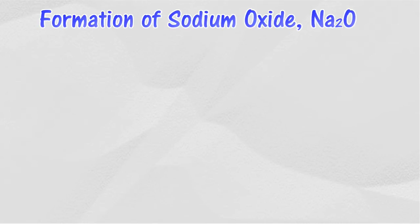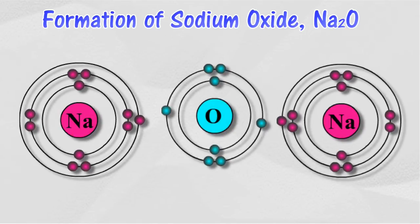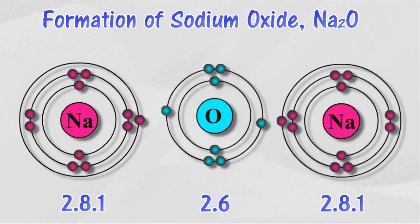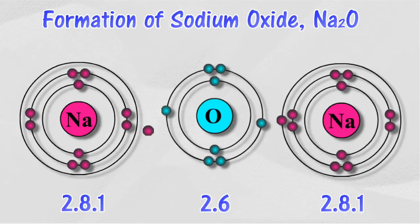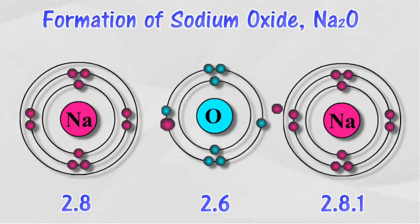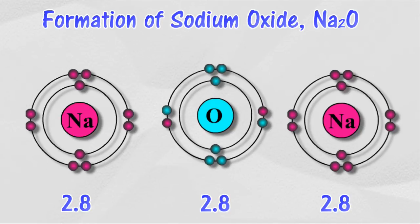Next, the formation of sodium oxide, Na₂O. The electron arrangement of a sodium atom is 2.8.1, and the electron arrangement of an oxygen atom is 2.6. During the formation of the ionic compound sodium oxide, each of the two sodium atoms transfers 1 electron from its outermost shell to 1 oxygen atom, so that both can achieve a stable electron arrangement.